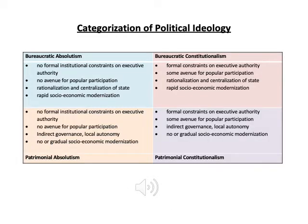This slide gives you more information than you actually need to know. There are essentially four types of ideology that I categorize. The bureaucratic types are the modernist ones. The patrimonial ones are the traditionalist ones. Absolutism means those leaders who favor a more authoritarian form of government.